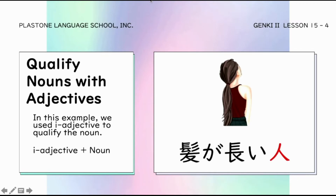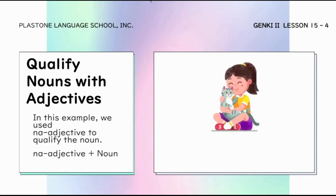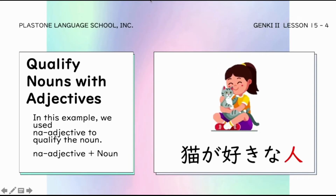E-adjective pa rin: kamigan nagay hito — tao na mahaba ang buhok. Next, gamitin naman natin ang na-adjective. Nekoga sukina hito — instead of just saying person, sinabi natin na person na gusto ang pusa, or a person who likes cats.